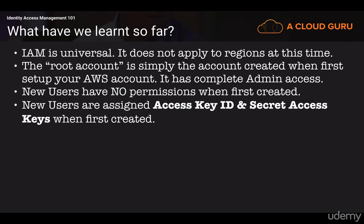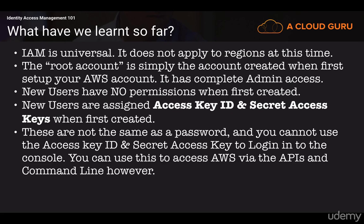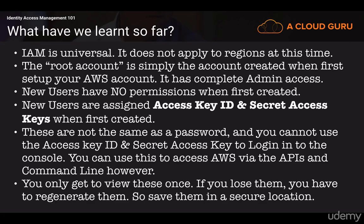New users are assigned an access key ID and a secret access key when first created — that's what we downloaded in our CSV file. It's really important not to confuse them with passwords. You can't use your access key ID and your secret access key to log into the AWS console; that's why we then went on to create a password for our users. What you can use the access key ID and secret access key for is to communicate with AWS via the command line, SDKs, or APIs. You only get to view those credentials once — if you lose them, you have to regenerate them. You need to download them and save them in a secure location.